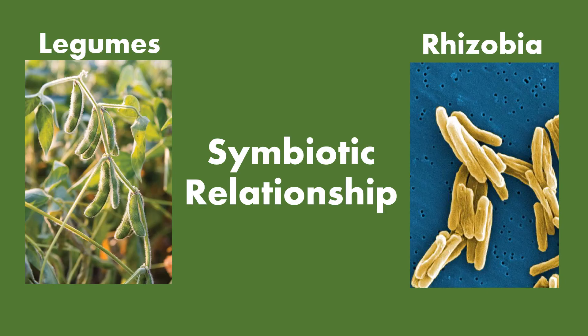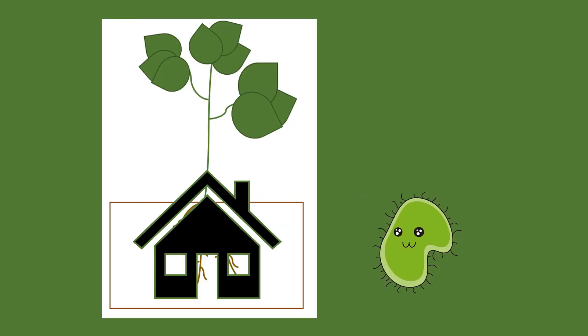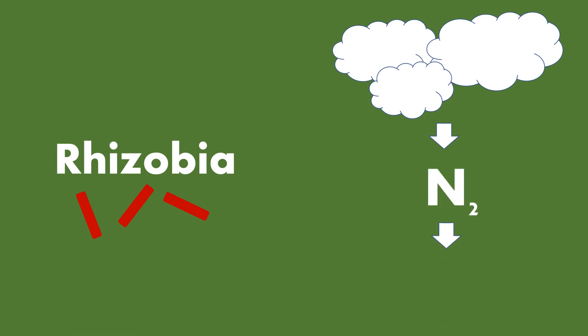Legumes such as beans and peas have a symbiotic relationship with the diazotrophic bacteria rhizobia, though only 20% of legumes are known to fix nitrogen. In this relationship, the roots of the legume plant provide a home for the rhizobia. For legumes, the rhizobia convert N2 from the atmosphere into ammonia.